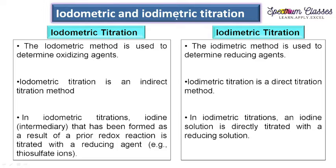One is iodometric titration and the other one is iodimetric titration. So here in this video, I am going to summarize a few differences and similarities in these two types. First, you see the names — iodometric and iodimetric. What is the difference in the spellings? In iodometric it is 'O' and in iodimetric it is 'I'. This is important to relate.